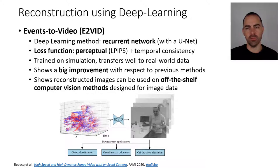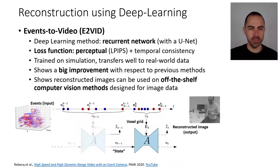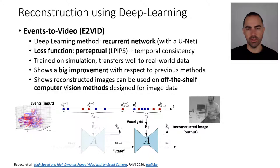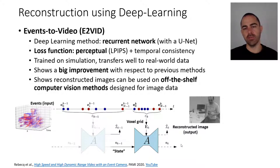The reconstructed images are of good enough quality to be used on off-the-shelf computer vision methods designed for image data, such as object classification, visual-inertial odometry, or depth estimation. Events come asynchronously in time but are fed to the network in the form of a voxel grid — we convert the events into an interpolated voxel grid. The network receives two things: the events and the state from the previous reconstruction via a recurrent connection, then outputs the reconstructed image and the state for the next reconstruction.